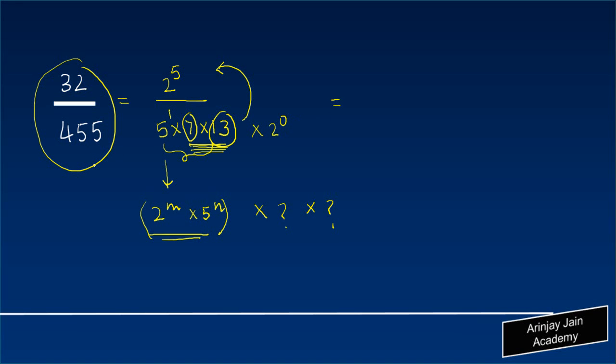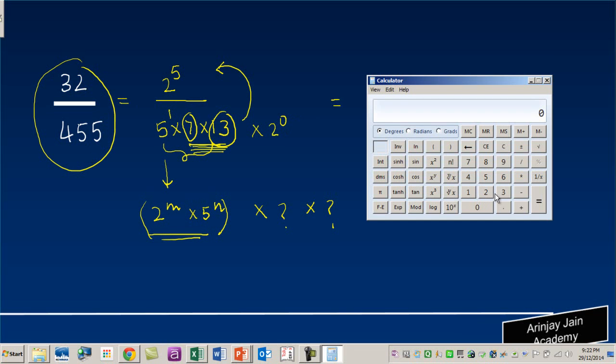And I could show you through the use of this calculator. So 32 divided by 455 is equal to...